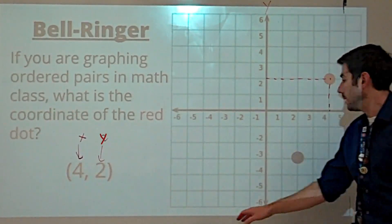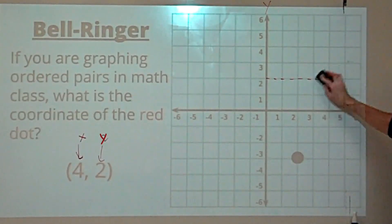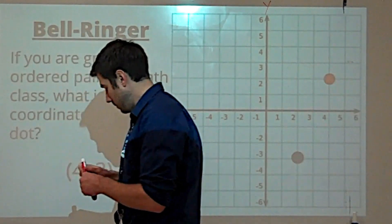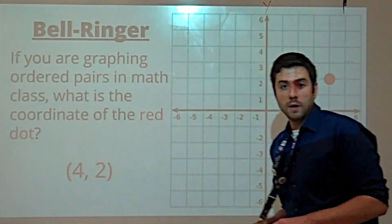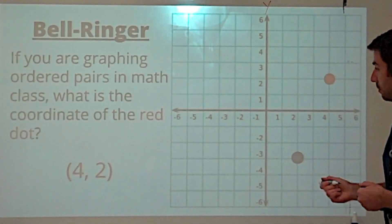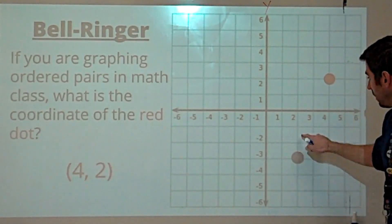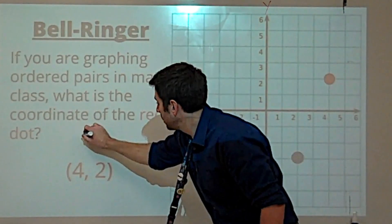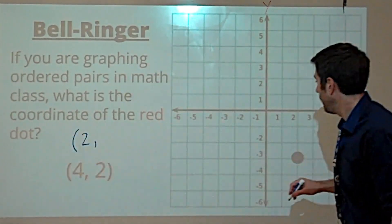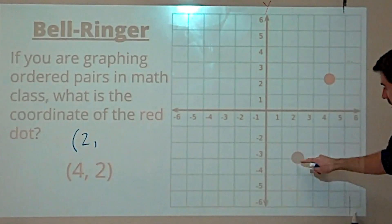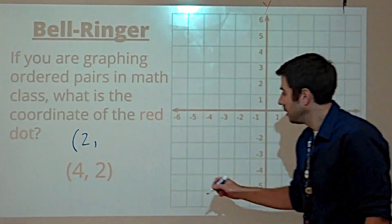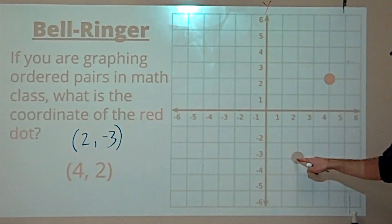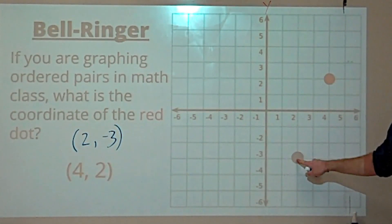Where would this blue dot be? Check your work. The blue dot right here would be two spots over on the x. And on the y-axis, it would be three units down. So that's at 2, negative 3.